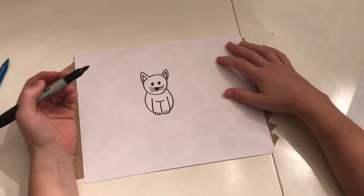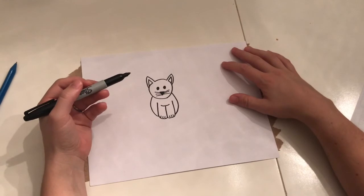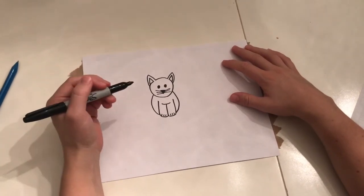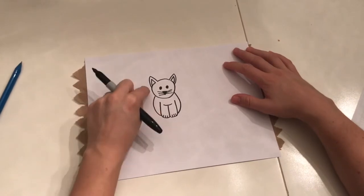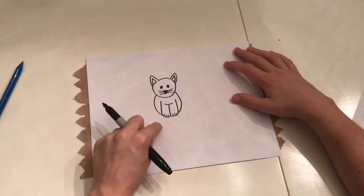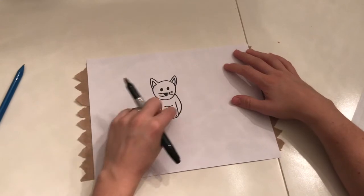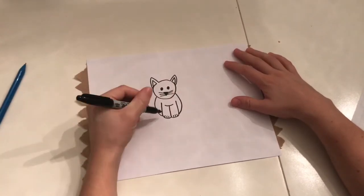And then the last thing we need so that he really looks like a cat is a tail. You can choose where you want his tail to be. It's just going to be a curvy line. I'm going to make it go up like this. But you could have it like curved around. So that it's resting on the ground. Or you could put it on the other side. Wherever you want to put it.